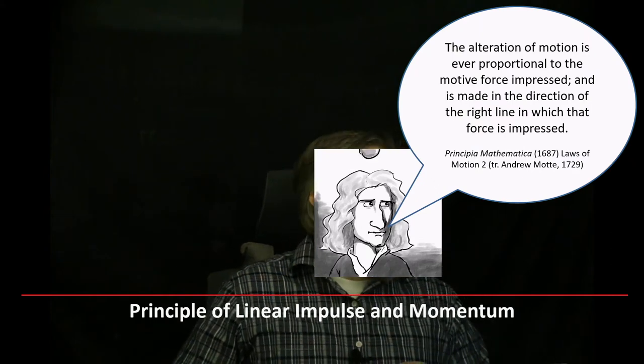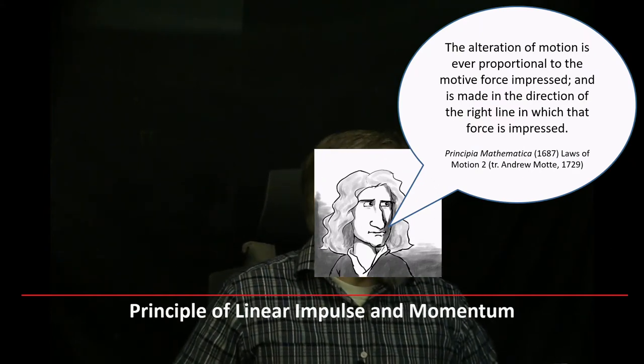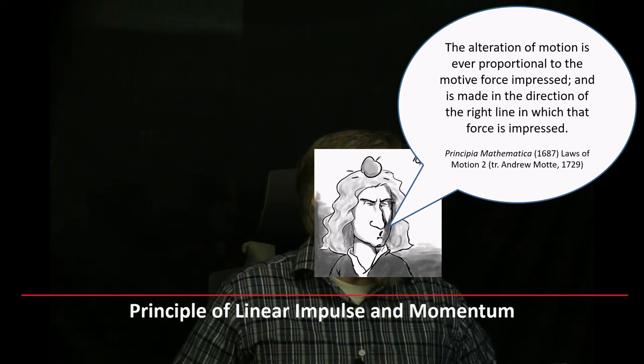Most of you know about Sir Isaac Newton, and if I were to ask you what is Newton's second law, most of you would probably say F equals MA. Well, what if I were to tell you that Newton did not use equations in his original Principia Mathematica publication in 1687. In fact, F equals MA was not popular until after Newton's death in the 18th century. So you might ask, if Newton's second law was not F equals MA, what was it? Well, in the 1729 translation from Latin, Newton's second law states: the alteration of motion is ever proportional to the motive force impressed, and is made in the direction of the right line in which that force is impressed.